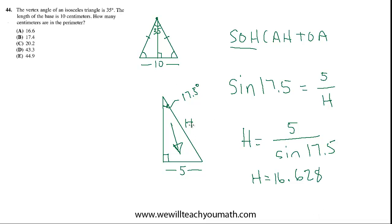That represents the hypotenuse. There's two of those, right? One for the right side of the triangle, one for the left. So we double that. That's 33 and change. And then add 10 for the base. So this times 2 plus 10. Final answer is 43.3. And the best choice is D.